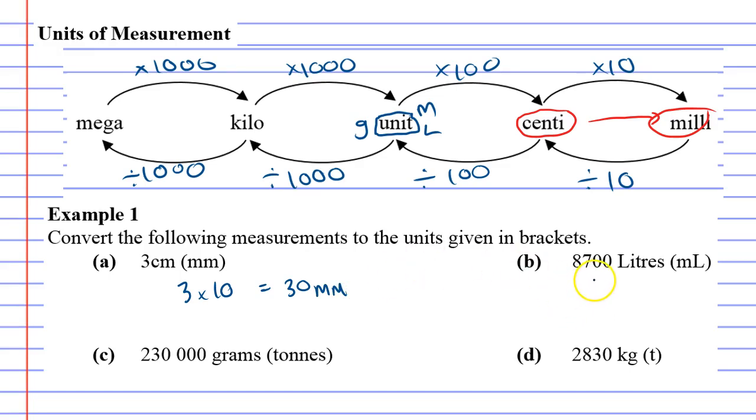Now let's look at question B. We'll do this one in green. This one converts from liters to milliliters. Liters has no prefix, so it falls where the unit is on the diagram. To get to milliliters, we take two steps, which tells us to multiply by 100 and then by 10.